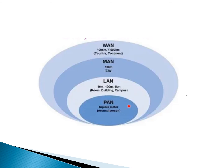To summarize the types: if we want to create a network in the area of square meters around a person, we use a PAN. For 10 meters, 100 meters, or 1 kilometer — for a room, building, or campus — we use a LAN. If we want to create a network within cities, 10 kilometers or more, we use a MAN. WAN is for country and continent level. This comparison shows which type of network to use for different scales.